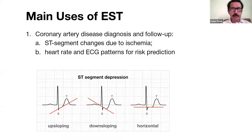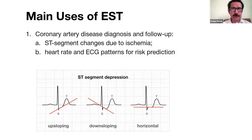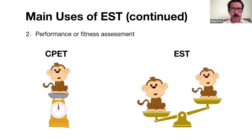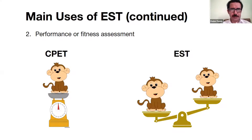We can also use this ECG for risk prediction if a person has known ischemia. And the second use: we can use exercise stress test for performance and fitness testing.